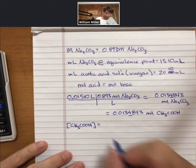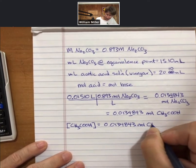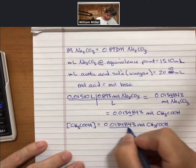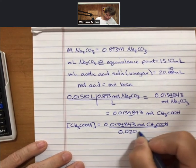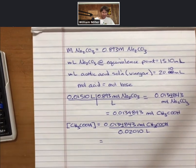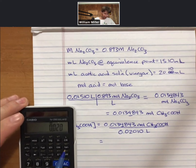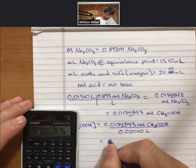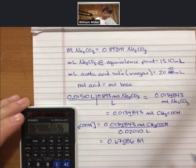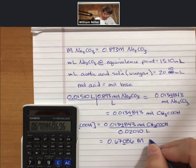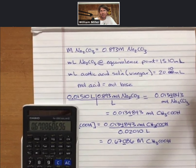So my concentration of acetic acid is going to be moles divided by volume. And if I multiply this out, I have my number of moles already in my calculator. Divided by 0.02010, I get 0.67086 molarity acetic acid as my result.